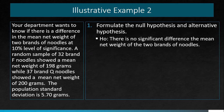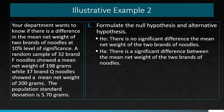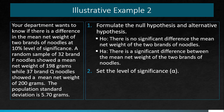Step 1: The null hypothesis is that there is no significant difference between the mean net weight of the two brands of noodles. The alternative hypothesis is that there IS a significant difference between the mean net weight of the two brands of noodles. Step 2: The level of significance is 10%, or alpha equals 0.10.